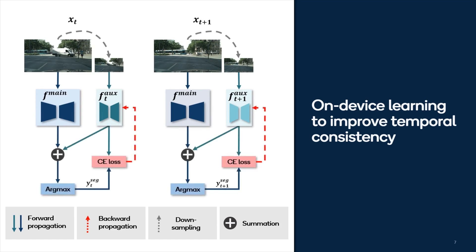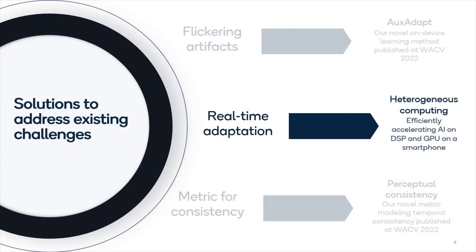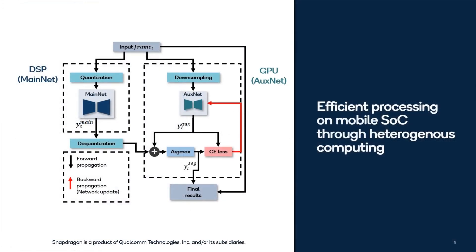Both outputs are combined to generate the final prediction and to update auxnet, which in turn helps enhance the temporal consistency of the original output. To enable real-time adaptation on a smartphone, we utilize heterogeneous computing on Snapdragon processors to distribute AI tasks to the DSP and GPU, efficiently accelerating AI computations.